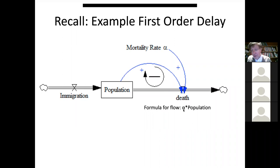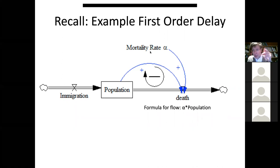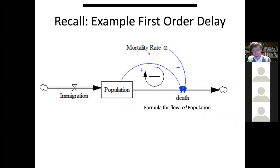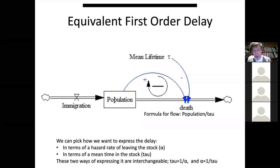For example, if the mortality rate is 0.1 per day — 10% per day — the mean time in that stock is 10 days. If the mortality rate is 0.01 per day — 1% chance per day — the mean time is 100 days. This can be shown through a relatively simple integral calculus exercise.